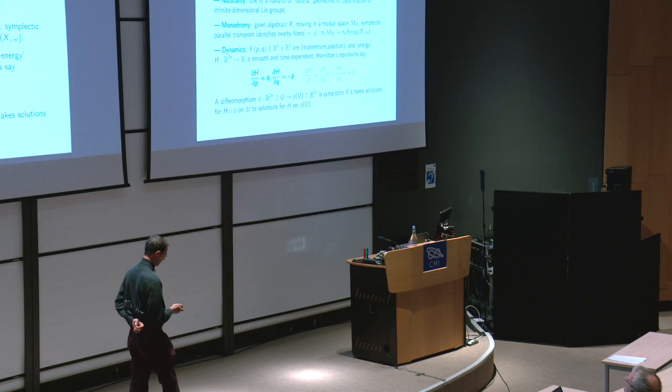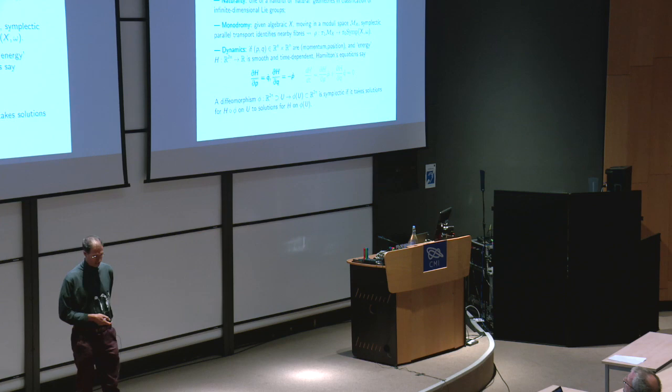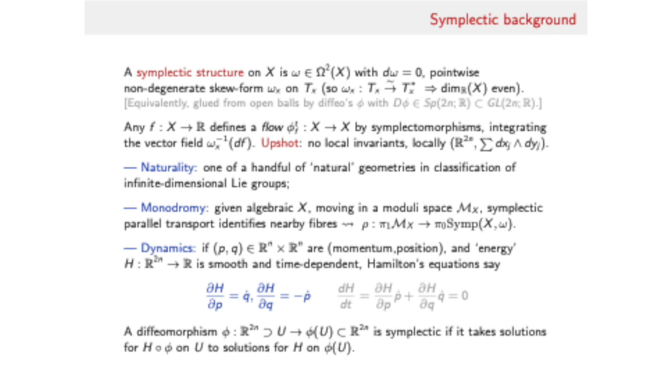We're in differential geometry, differential topology. A symplectic structure on a manifold is a closed non-degenerate two-form. A two-form means we have a family of skew-symmetric forms on all the tangent spaces, and these are just non-degenerate as bilinear forms, so they identify the tangent and cotangent spaces. Linear algebra tells you that can only happen if the manifold is even-dimensional.